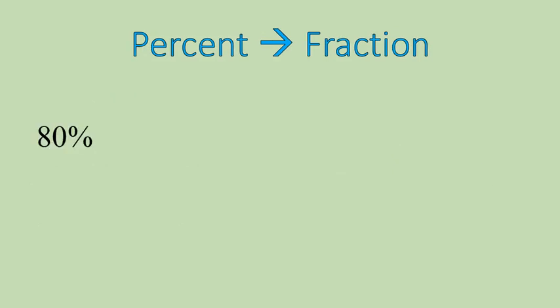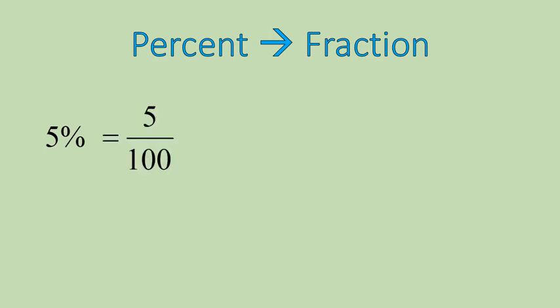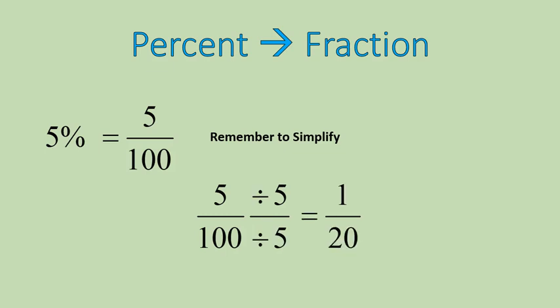For percent to fraction: if I have 80%, I know that means 80 over 100, or 80 per 100. I can put it over 100 and simplify to four-fifths. Here's another example — try 5%. Five percent means five out of 100, because percent means out of 100. And if we simplify that, we get one out of 20. Percent to fraction: put it over 100, simplify if needed.